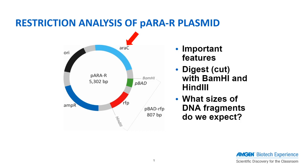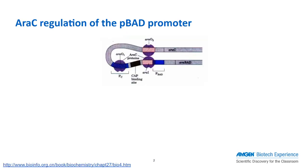Next, we come to the ARIS-C gene, PBAD promoter, and RFP gene. The PBAD promoter controls the expression and production of RFP. The ARIS-C gene codes for a protein that regulates the transcription of genes under the control of the PBAD promoter. In the absence of the sugar arabinose, the ARIS-C protein binds to several regions of the promoter, creating a loop in the DNA and effectively preventing any downstream transcription from happening.